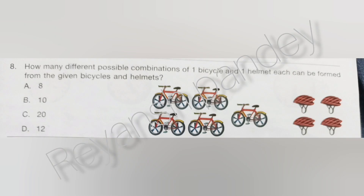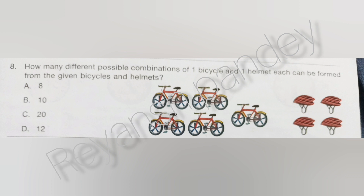How many different possible combinations of one bicycle and one helmet can be formed from the given bicycles and helmets? I am confused in this question, but I guess the answer is A.